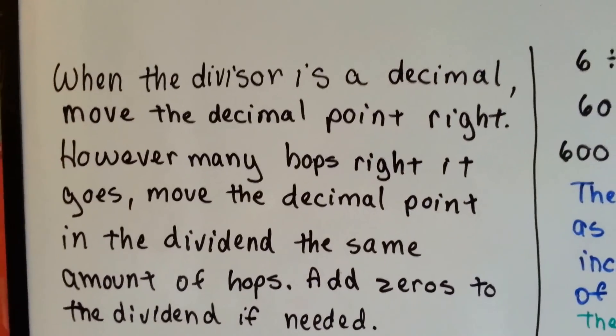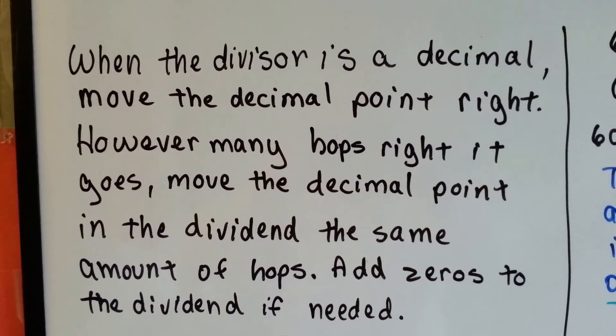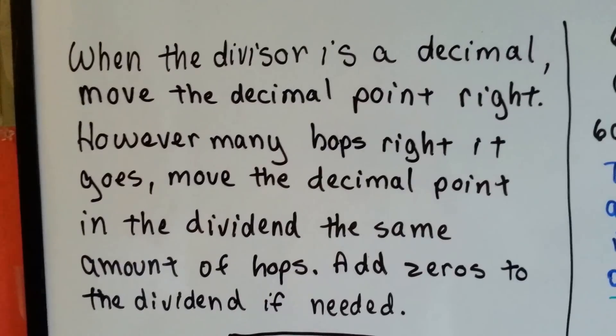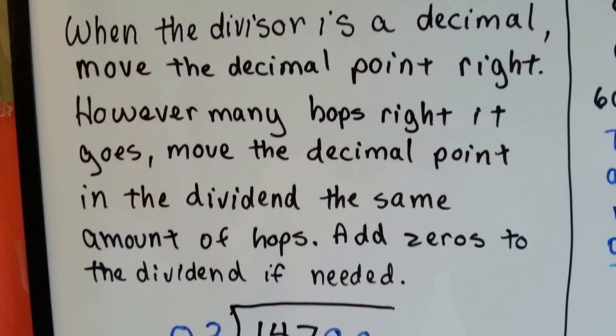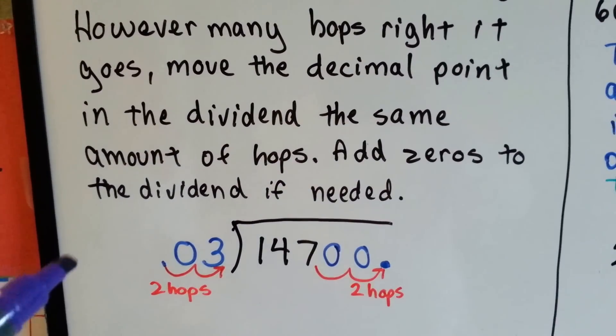When the divisor is a decimal, you move the decimal point right. However many hops right it goes, you move the decimal point in the dividend the same amount of hops. And then you add zeros to the dividend if needed.